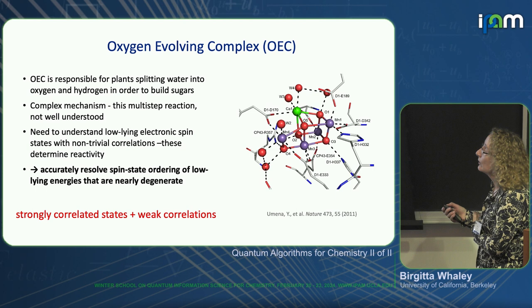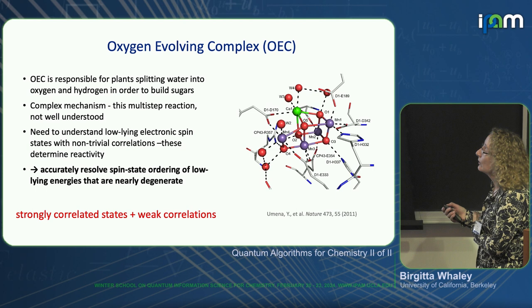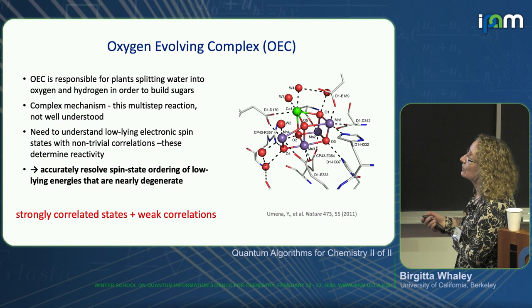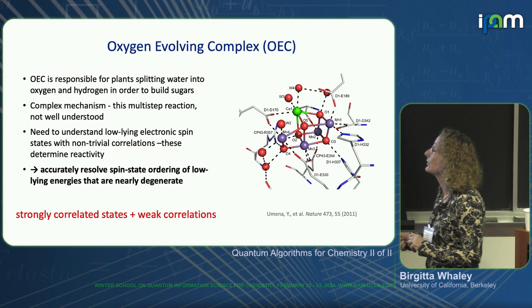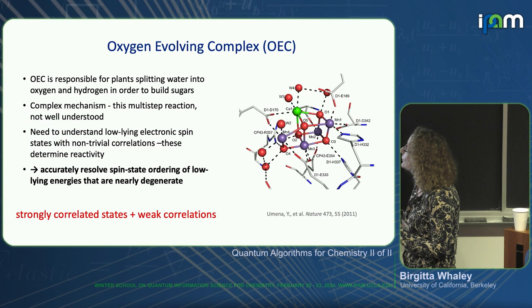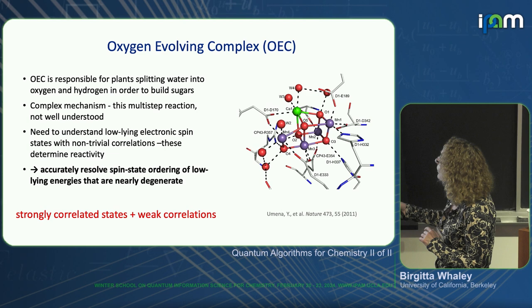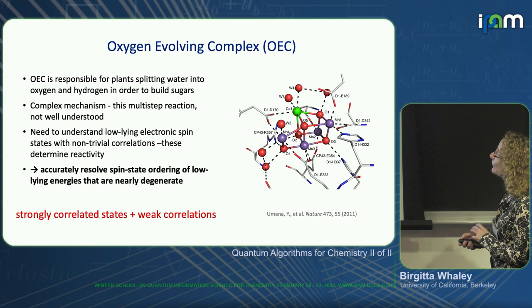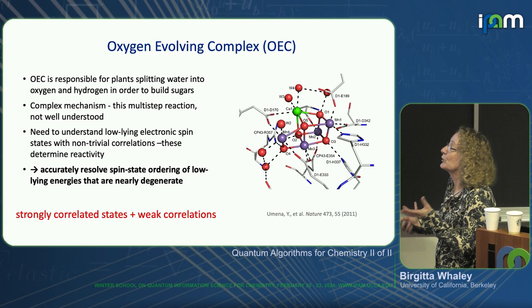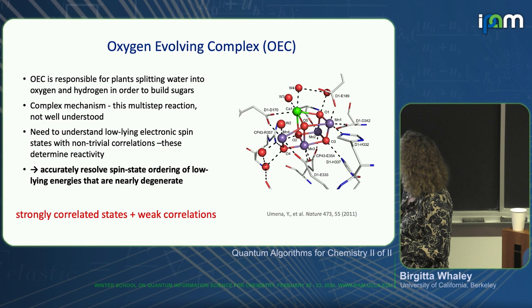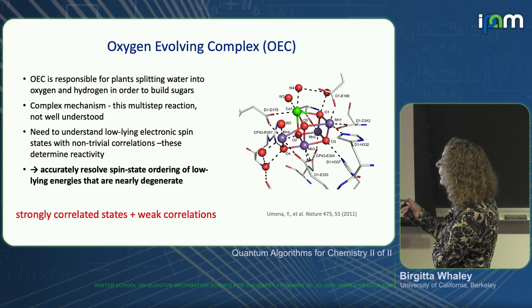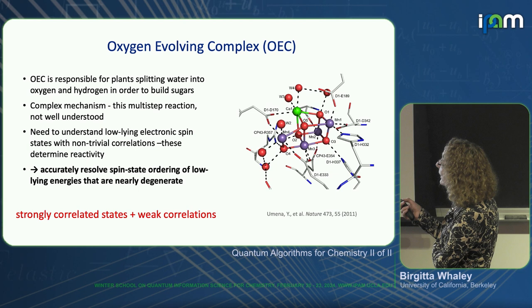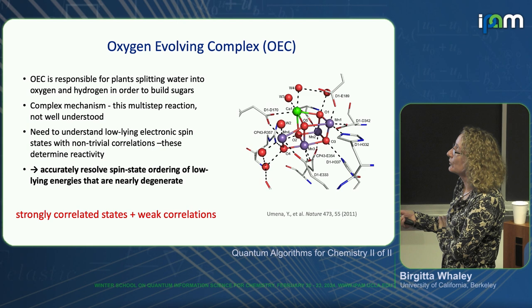This is the oxygen-evolving complex of photosystem II, responsible for green plants splitting water into oxygen and hydrogen to build sugars — the central core of photosynthesis. After light is absorbed and electron-hole pairs are created, there's a complex here of manganese metal atoms with oxygens in between. They exist in multiple spin states, and the mechanism by which excited-state energy is transferred between them is not well understood. A lot of theory is being done to understand the spin state ordering of the low-lying energies of this complex.